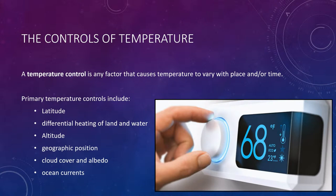A temperature control is any factor that causes temperature to vary from place to place and from time to time. The primary controls of temperature include differential heating of land and water, altitude, geographic position, cloud cover and albedo, and ocean currents. For the rest of this lecture, we will focus on how each of these controls affects temperature at a given location.